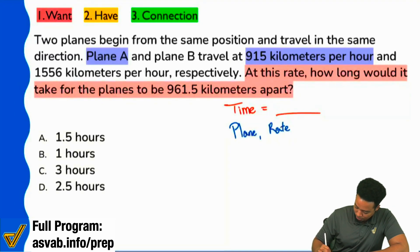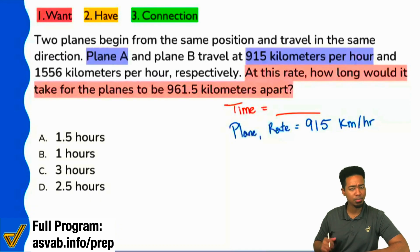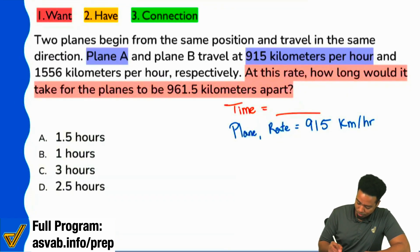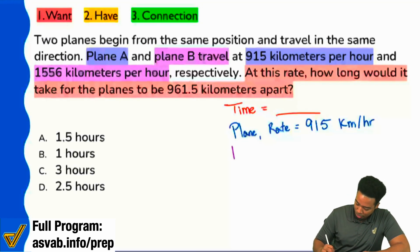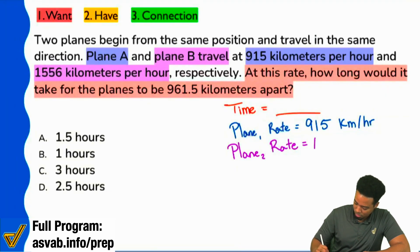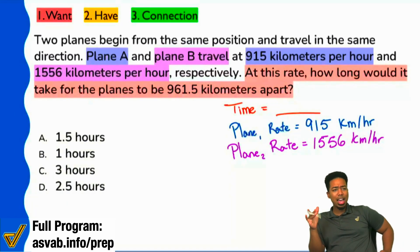So Plane A's rate is 915 kilometers per hour. Now if we take a look at Plane B, Plane B travels 1,556 kilometers per hour. My party people, what's different about this question versus the previous one? Yeah — we have two rates. We have two rates.